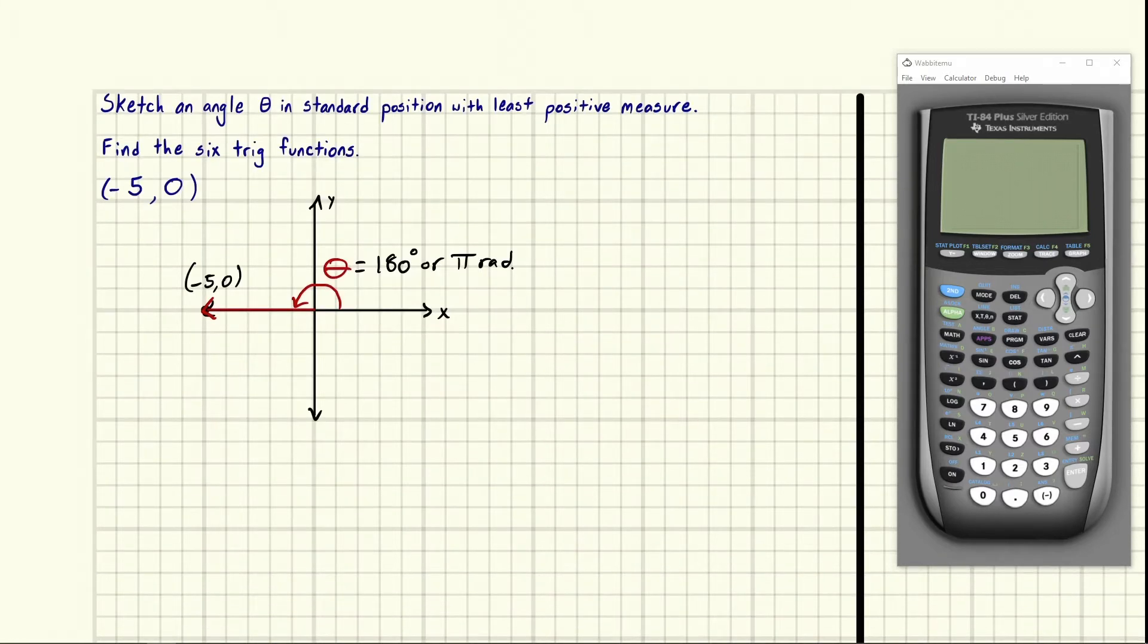So knowing this, there are several special circumstances that arise that we can use to find the different trig angles, but this is our sketch with least positive measure. If I asked for least negative measure we would just go the other way. We'd go like this and we'd have theta and then that would be equal to negative 180 degrees or negative pi radians. It would just simply change direction.